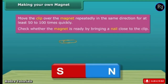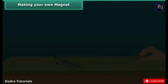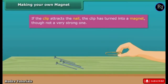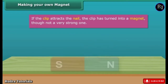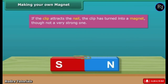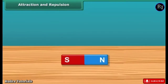Now, to check whether the magnet is ready, bring a nail close to the clip. If the clip does not attract the nail, then continue the same process for some more time. Keep in mind that the pole of the magnet and the direction of its movement should not change.